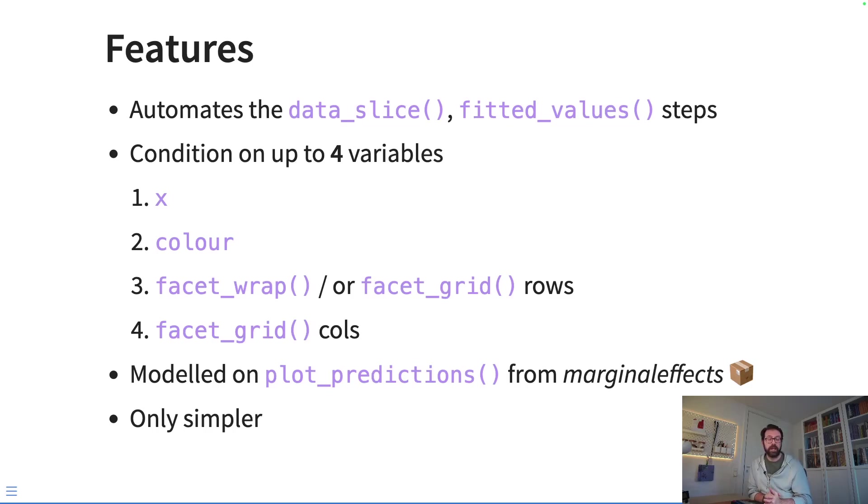Now the function has been shamelessly modeled on plot_predictions from the excellent marginal effects package. And the only real difference is that conditional_values is much simpler than this plot_predictions function. Plot_predictions in marginal effects can do many more things, but I just wanted a very simple function here that would allow us to visualize outputs from GAMs.